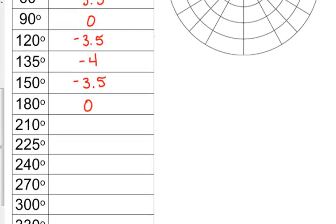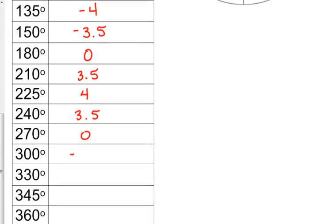How about we predict 210, positive 3.5, 4, 3.5, 0, negative 3.5, negative 4, negative 3.5, 0.